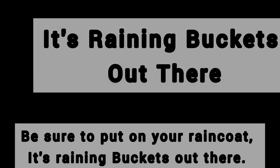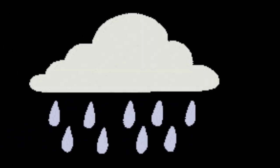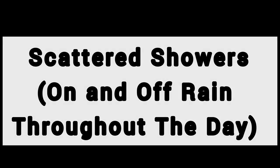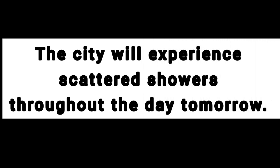Now let's move to something about raining for a short period. 'Scattered showers' is used for on-and-off rain — when it was raining for short periods throughout the day. In weather forecasts, especially for Delhi, they say: 'The city will experience scattered showers throughout the day tomorrow.' Try listening to the weather forecast carefully and you'll come across scattered showers, but you can always use it in your conversations.